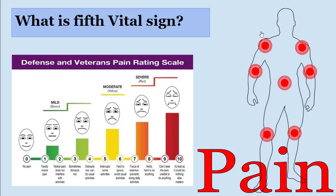What is the 5th vital sign? The 5th vital sign is pain. How to document pain? There are two pain assessment tools: the numerical pain assessment tool and the Wong-Baker facial pain assessment tool. 0 is no pain, 1 to 4 is mild pain, 4 to 6 is moderate pain, and 6 to 10 is severe pain.